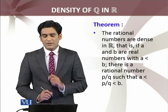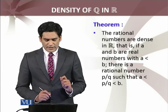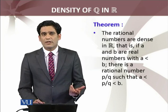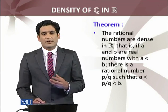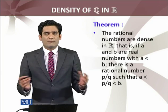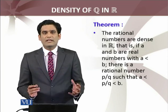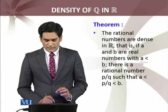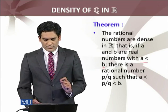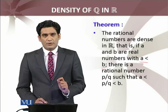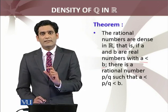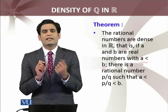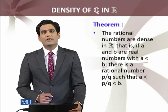The theorem is: the set of rational numbers is dense in R. That is, if A and B are real numbers with A less than B — without any loss of generality I have supposed A less than B — then there is a rational number p over q such that A less than p over q less than B. In fact, there are infinitely many rational numbers between any two real numbers.